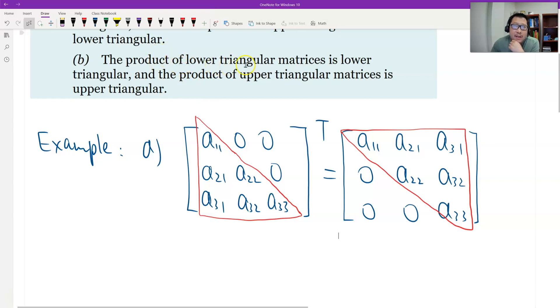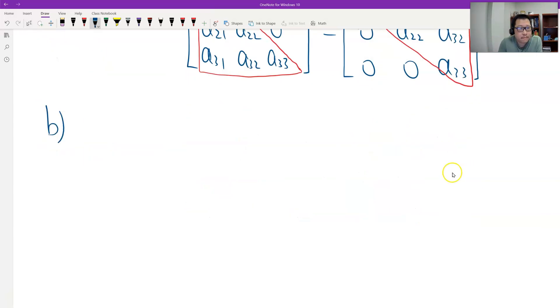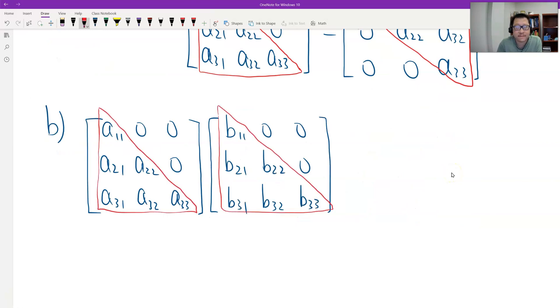Let me give it like two three by three lower triangular and then we multiply together to see what is the product. Okay, now so we have two three by three lower triangular matrices multiplied together. What is the result? So we do calculation by the definition of matrix multiplication. See, now what do we get? We will get a three by three, right? The size is three by three.